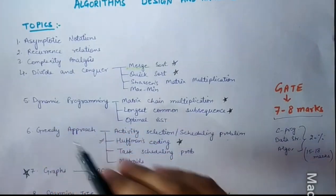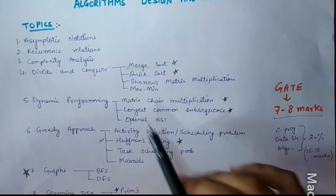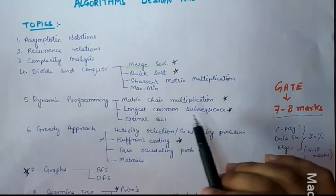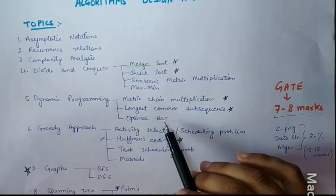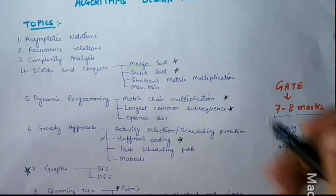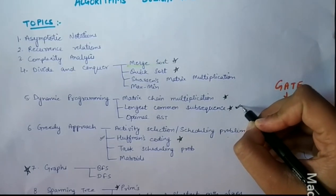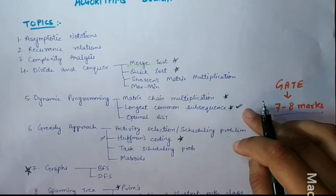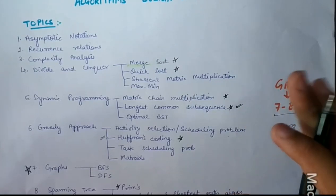Next topic is Dynamic Programming. This includes Matrix Chain Multiplication, Longest Common Subsequence and Optimal Binary Search Tree. These are three important topics. This is a numerical-based topic, LCS. We have to do numerical-based practice in this topic.